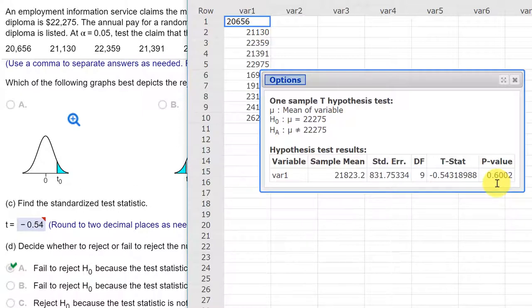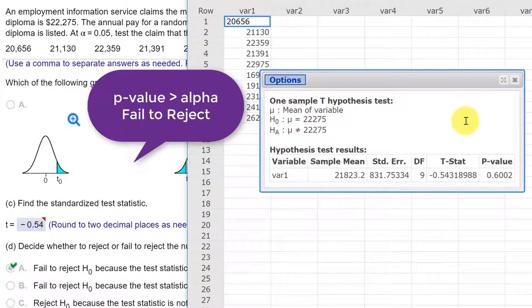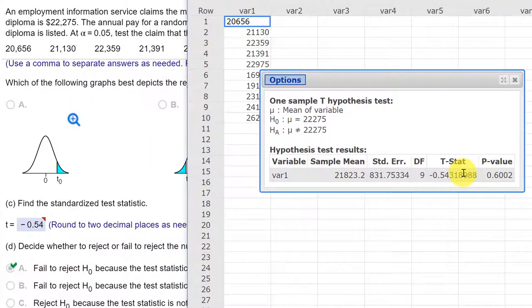Which is a very large p-value, and with our alpha of 0.05, we would fail to reject the null because the test statistic, if we look, is not in the rejection region, but also because p-value is greater than alpha. And our conclusion would be there is not sufficient evidence to reject the null.